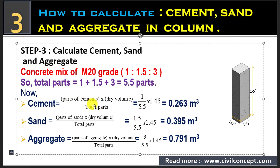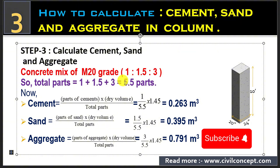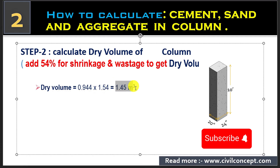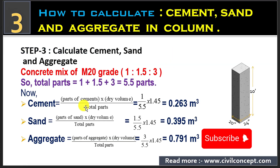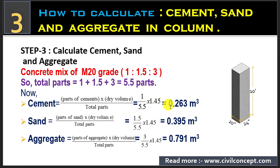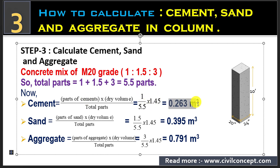Now we apply the formula: volume of cement equals parts of cement multiplied by dry volume, divided by total parts. Parts of cement is 1, dry volume is 1.54 meter cube, and total parts is 5.5. Putting all these values in, we get 0.263 meter cube. This is the volume of cement.